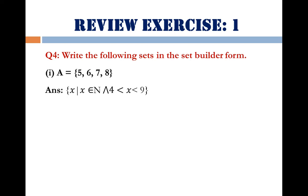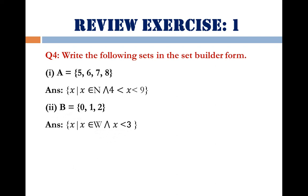We can see that the elements in Set A are natural numbers. Next, part 2: Set B has elements 0, 1, 2. These are elements of the set of whole numbers. So the answer is: B = {x | x ∈ W and x < 3}. Hope you can easily understand.